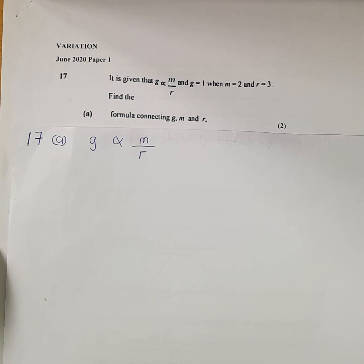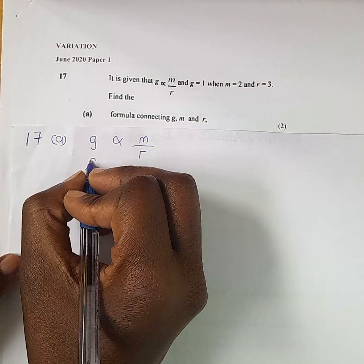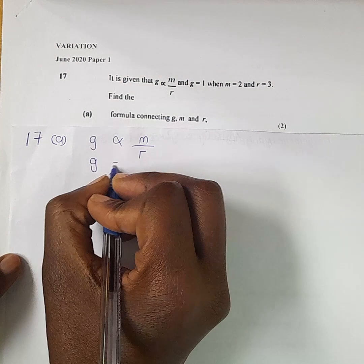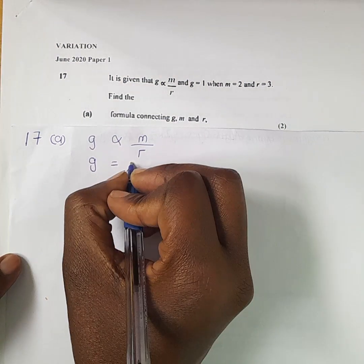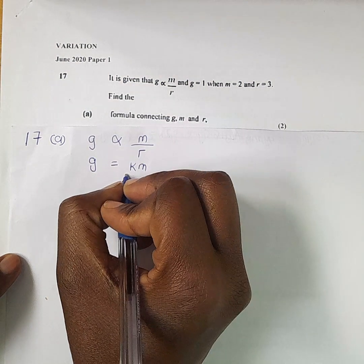The first step is that we need to remove the alpha sign. In order to remove the alpha sign, we are going to introduce an equal sign and a constant. So it is going to be G is equals to KM over R.